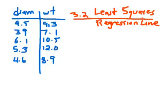We're going to talk about section 3.2, which is something called the least squares regression line. The least squares regression line is also abbreviated LSRL, which is a term you're going to hear a lot in this section.